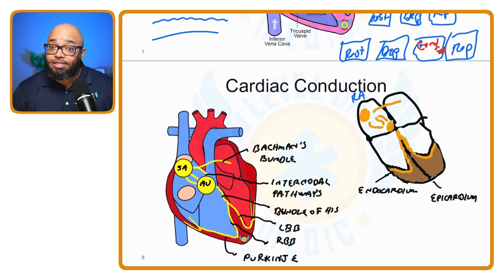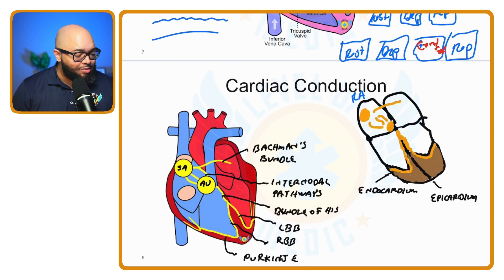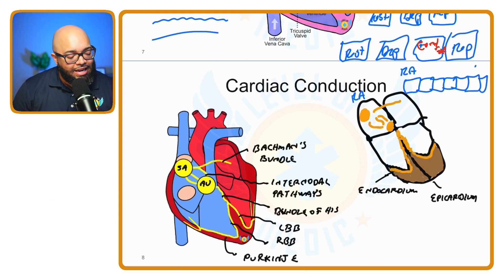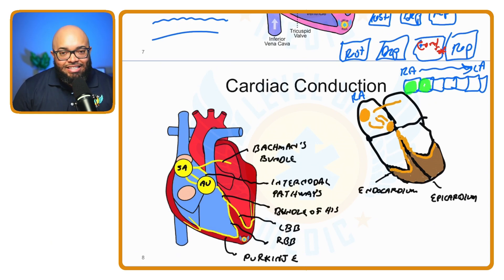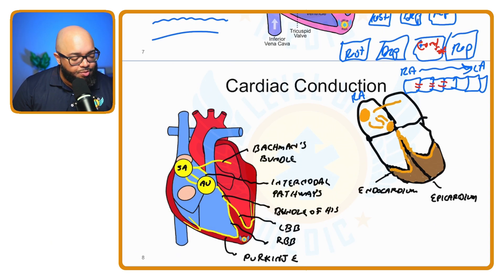The SA node fires and lands on the right atrium, but we don't want just the cells in the atria to get excited — we need all cells throughout the atrium to depolarize at the same time. So the signal needs to spread from the right atrium to the left atrium. We don't want one cell at a time getting excited; we need it to happen like a wave very quickly.